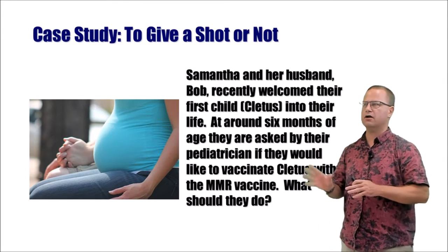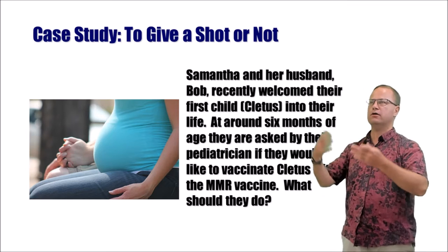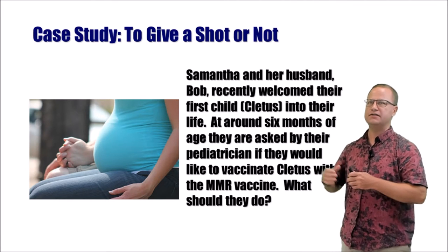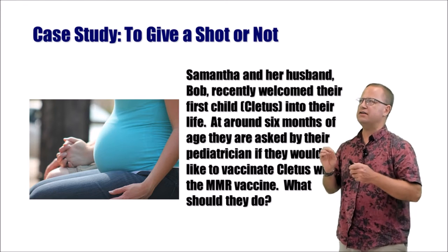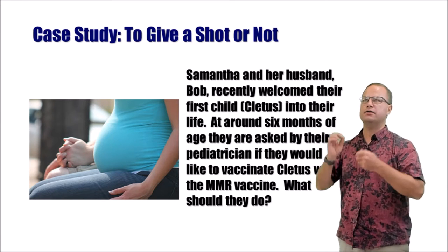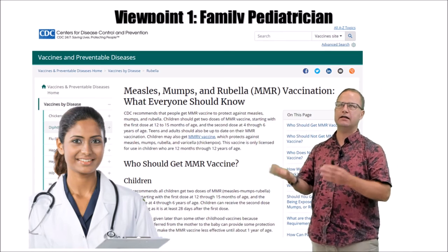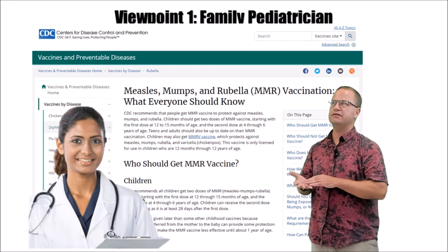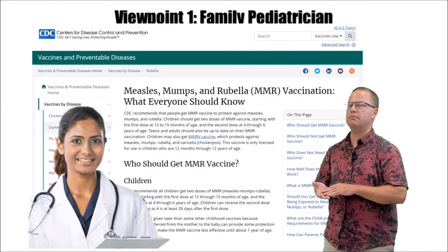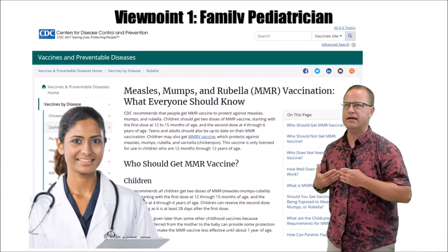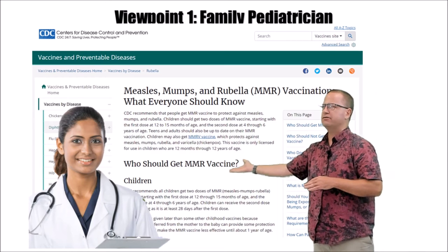Now we'll shift to the case study in your textbook called 'To Give a Shot or Not.' It's about Samantha and her husband, who have welcomed a new child — let's call that child Cletus — who is around six months old, the time they would normally be vaccinated for measles, mumps, and rubella. Their pediatrician will tell them yes, vaccinate Cletus: measles is a very virulent disease that spreads rapidly, has serious side effects, and vaccination protects not only their child but others in the population. The pediatrician can provide evidence from scientific studies and government websites like the CDC.